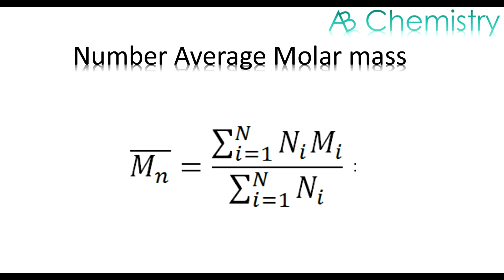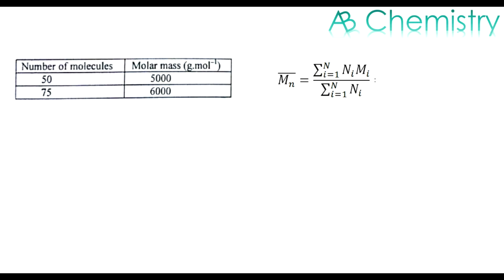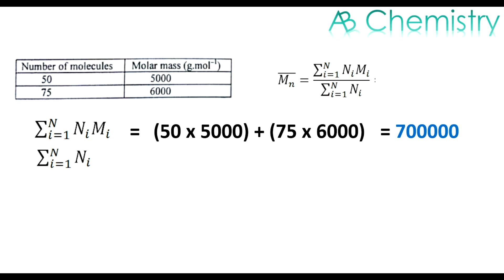Let us see how to calculate this. The equation and the table is given here. First we have to find the numerator, sigma ni·Mi. So 50 into 5000 plus 75 into 6000 will give 7 into 10 raise to 5, and sigma ni is 50 plus 75 will give 125.